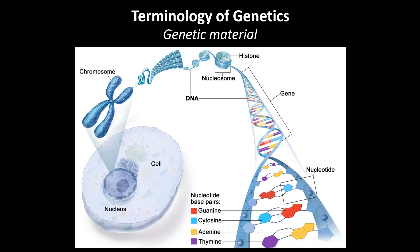In order to understand genetics, it is important to realize how the genetic material is organized in each individual cell. The heritable material of an organism, called DNA, can be found in the nucleus of each cell of the body. DNA is packaged into thread-like structures called chromosomes. Each chromosome consists of DNA tightly coiled around proteins called histones that support the structure.